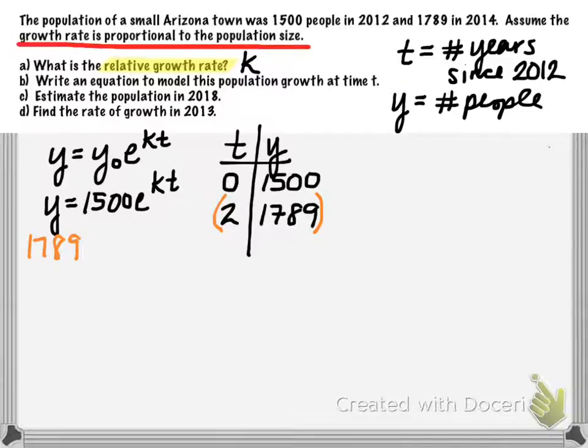I'm just going to substitute when y is 1789, when we have 1789 people. That is when our t, when time, was 2. And this will allow us to go ahead and do a little algebra and solve for k.